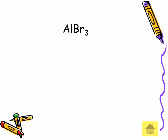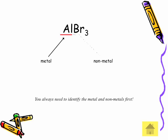So let's look at the first compound here, AlBr3. First thing you want to do is identify metal, non-metal first, and we happen to have that. Aluminum is the metal, bromine is the non-metal. So therefore, we have an ionic compound.